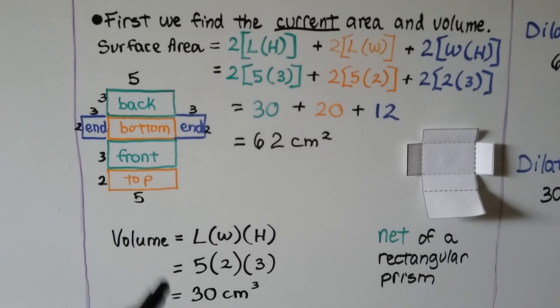For the volume, we do length times width times height for a rectangular prism, which would be 5 times 2 times 3, which gives us 30 centimeters cubed. Now we have our current surface area and our current volume. We can apply that scale factor, squared or cubed.